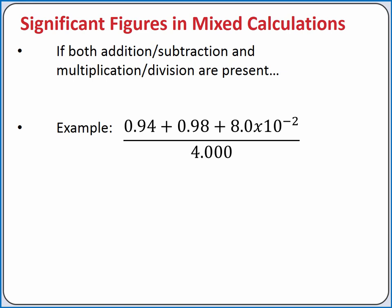If we have mixed calculations containing both addition or subtraction and multiplication or division, we need to apply our rules for significant figures according to the order of operations in the problem. If we enter this example into our calculator, we'll get the answer 0.5. To determine how many significant figures we need, we should complete the addition in the numerator first, and then complete the division according to the order of operations.